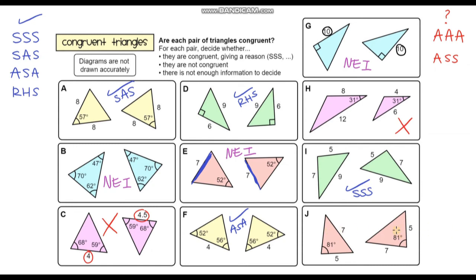For question J, we've got an 81 degree angle in both triangles. For this triangle, the side lengths either side of the 81 degree angle are 5 and 7. The other triangle also has a 5, but in order for these to be congruent the other side length would need to be 7 on the correct side. Because we've basically got the wrong side length in the wrong position, these two triangles are not congruent.